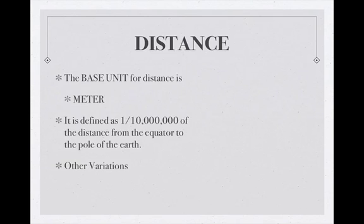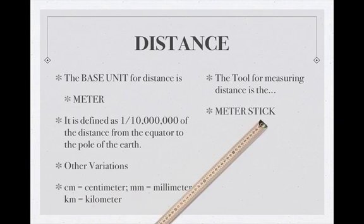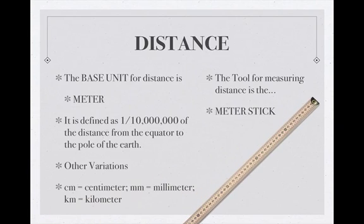There are other variations of this, like we had said. And all we need to do is plug in some of those prefixes that we had just mentioned. So I'm sure you've heard of centimeter or millimeter or kilometer. Okay, so a centimeter would be 1/100 of a meter. Millimeter would be 1/1000th of a meter. And a kilometer would be 1,000 meters. Now, it's important that we know what tool we have to use to measure distance. And I'm sure most of you know, we use a meter stick. And you can see in this picture here, this meter stick is broken up into 100 parts. So each one of those numbers represents one one-hundredth of a meter, or a centimeter.